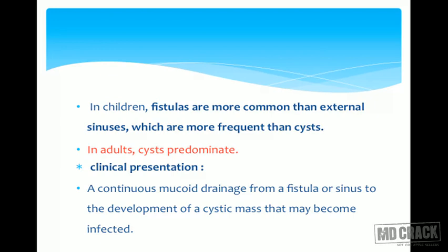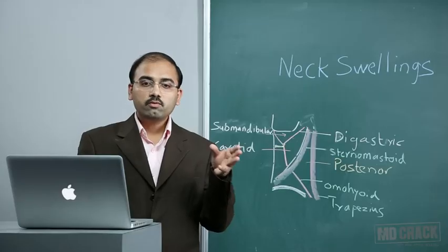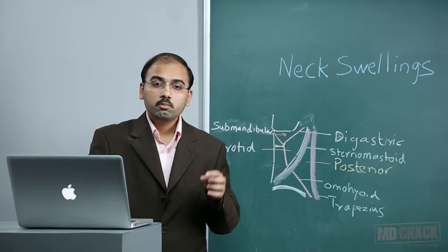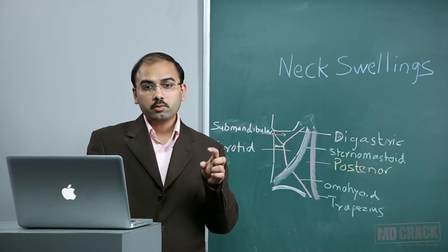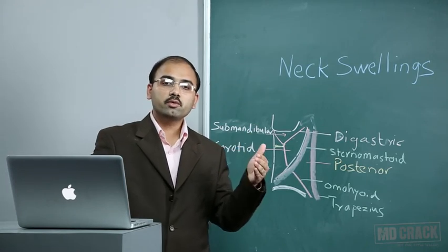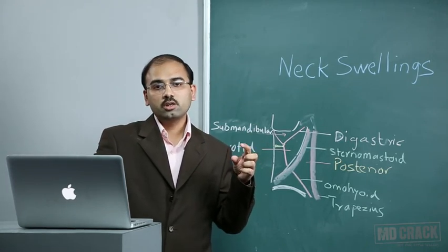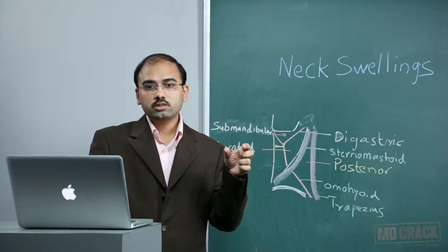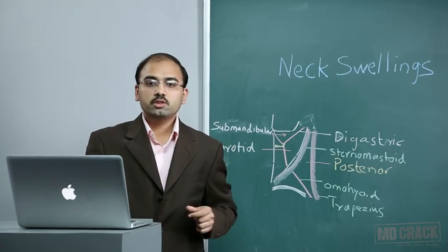All branchial remnants are present at birth, although they may not become clinically evident until later in life. In children, fistulas are more common than external sinuses, which are more frequent than cysts. In adults, cysts predominate. This difference between children and adults should be noted.